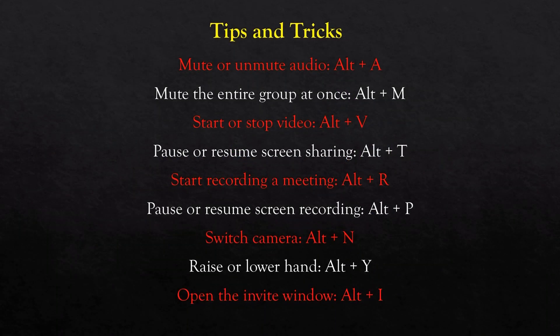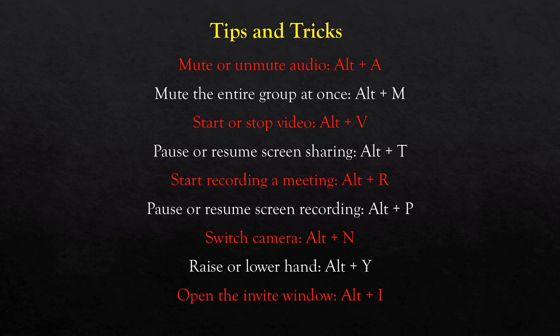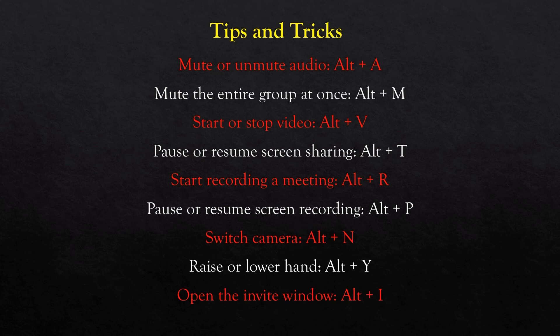Here's a list of tips and tricks — shortcuts that allow you to do different functions in the middle of a meeting. Mute or unmute your audio: Alt A. Mute the entire group at once: Alt M — only works if you're the host. Start or stop video: Alt V as we mentioned. Pause or resume screen sharing: Alt T. Start recording a meeting: Alt R. Pause or resume screen recording: Alt P. Switch cameras: Alt N — only possible if you have more than one camera. Raise or lower your hand: Alt Y — handy if you want to say something in the middle of the meeting. Open the invite window: Alt I. And to mention, this is for PC users only.